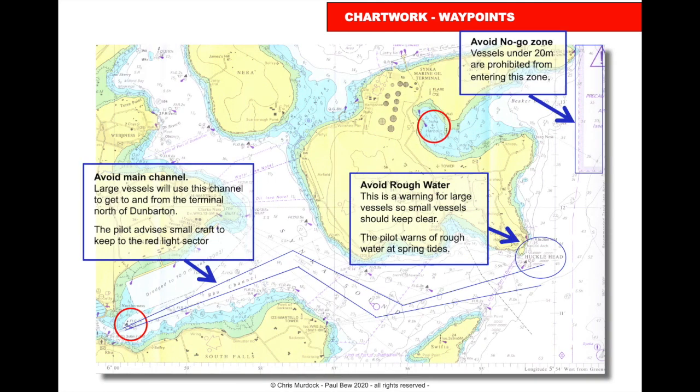As we depart, the almanac says to avoid the main channel, as large vessels use it to get to and from the terminal north of Dumbarton — the pilot advises small craft to keep to the red light sector, which keeps us out of the channel. Off Hucklehead, it says this is a warning for large vessels so small vessels should keep clear, and the pilot warns of rough water at spring tides.